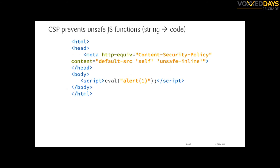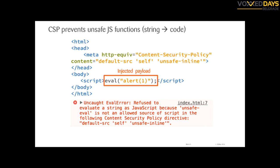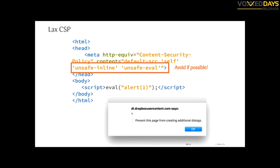If you really need inline scripts, you can add 'unsafe-inline' and the browser will allow them — but it's a bad practice, try to avoid it. Similarly, if you try to use eval() with CSP enabled, the browser will say 'No, that's an unsafe function.' You can whitelist it with 'unsafe-eval,' but always try to avoid both 'unsafe-inline' and 'unsafe-eval' because you are more exposed.